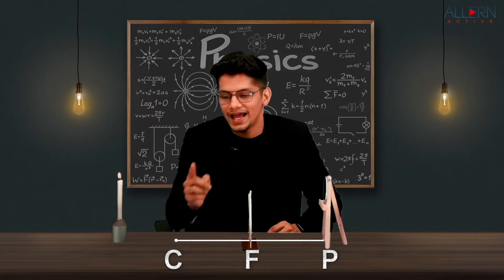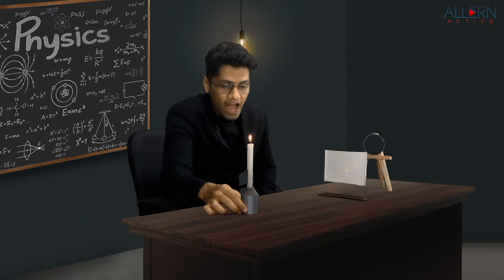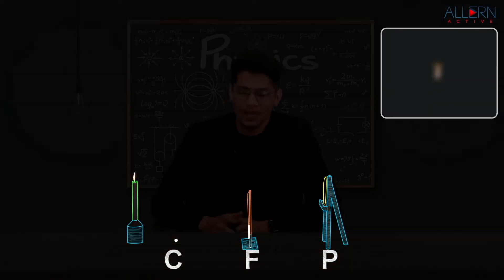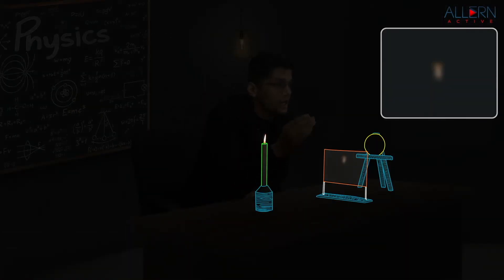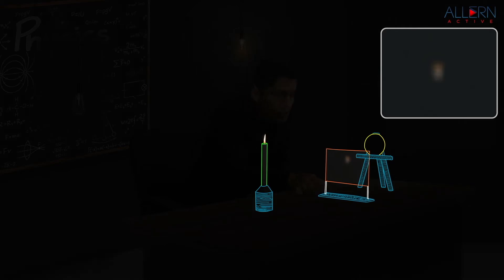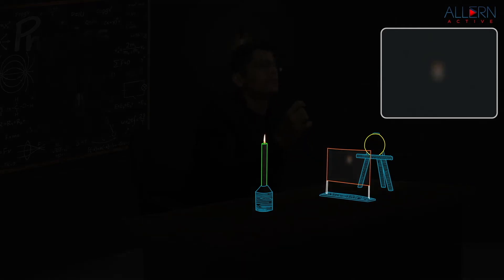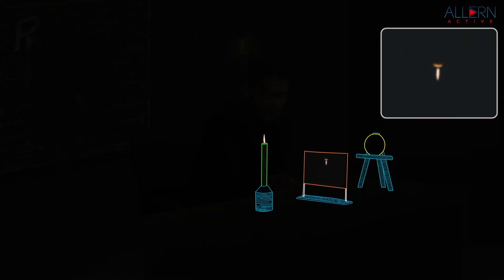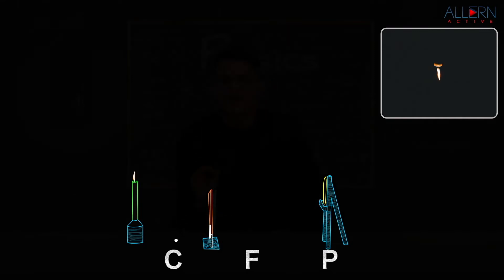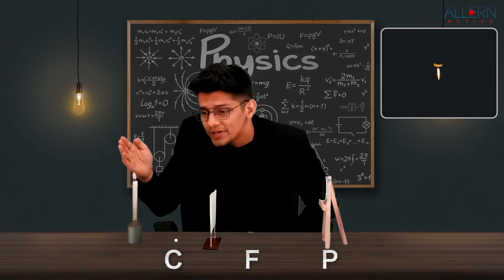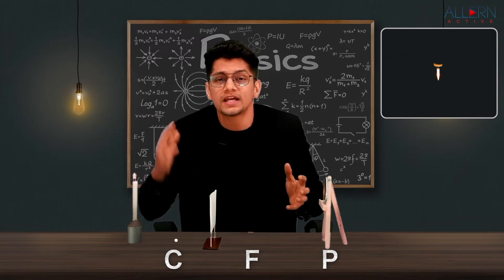Now we have our object beyond the center of curvature. The image on the screen is blurred, so we adjust the screen to get a sharp image. Moving the screen closer makes it more blurred, so we move it away from the mirror. We have now obtained a sharp image. We moved the object from infinity to beyond C, and we moved the screen away from the mirror.